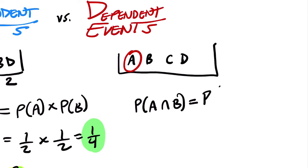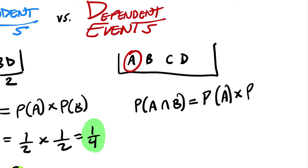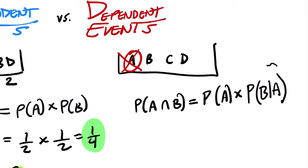In this case, I cannot just say that's times the probability of B, because the probability of getting a B is impacted if I took out an A first. If I don't put the A back — which I won't in this game — what's the probability of getting a B? There are three letters left, so it's not one out of four, it's one out of three. The probability has changed. So we say: the probability of getting B given that we chose an A first. That is our conditional probability.